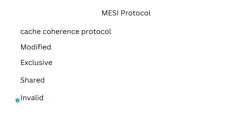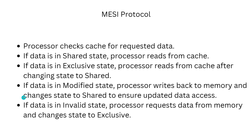When a processor requests data from memory, it first checks its own cache. If the cache line is in the shared state, the processor can simply read the data. If it is in the exclusive state, the processor can read the data but must first change the state to shared to allow other processors access. If the cache line is in the modified state, the processor must first write the modified data back to memory and then change the state to shared. If the cache line is in the invalid state, the processor must request the data from memory and change the state to exclusive.